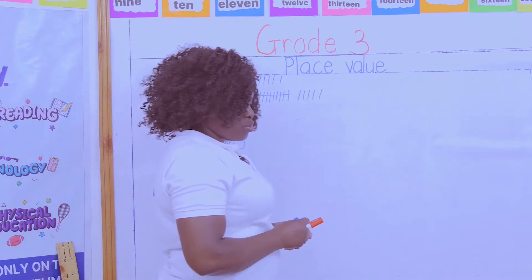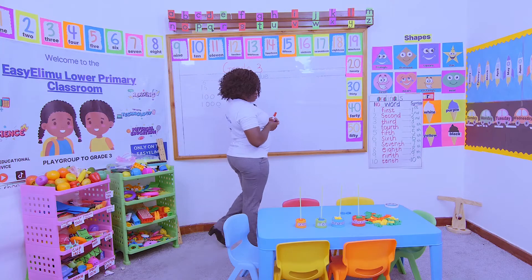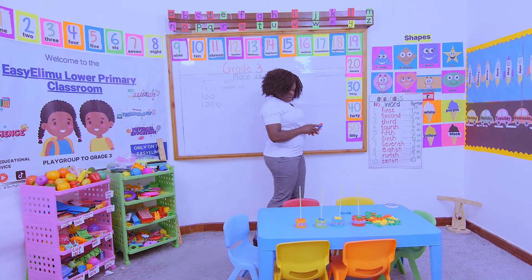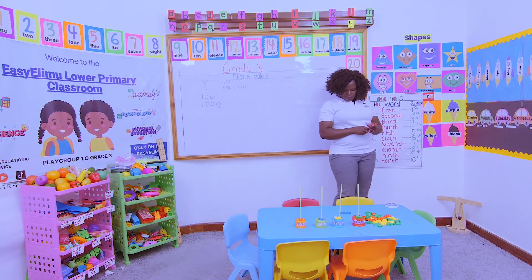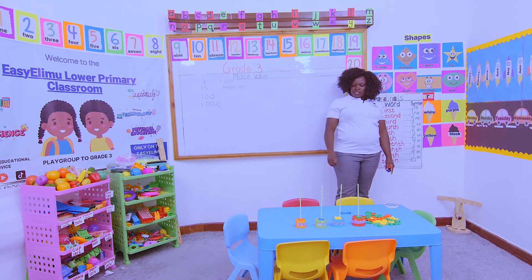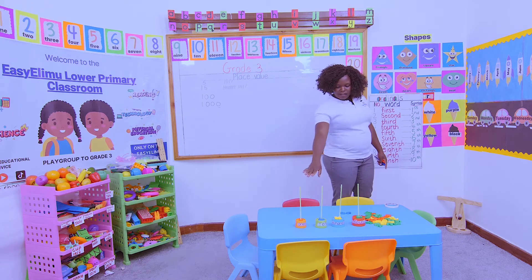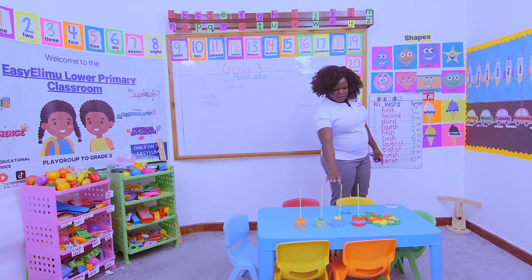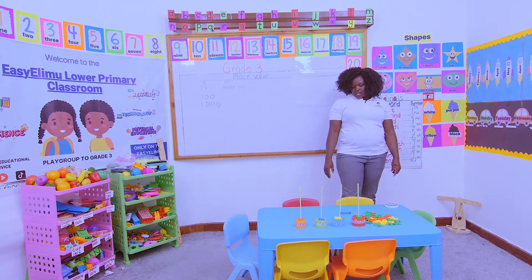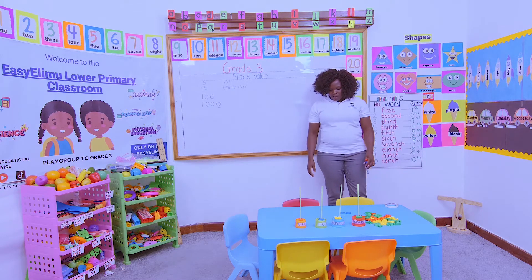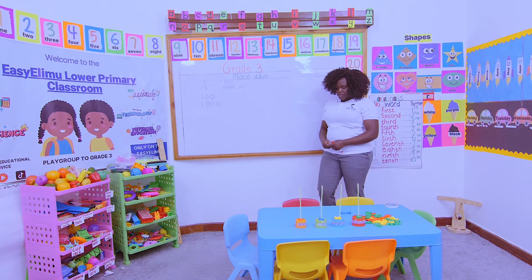How do we show 1,000 on the abacus? How do we show the thousands place value on the abacus? I have my 1s, I have my 10s, I have my 100s, and I have my 1,000s. Now I've been given a number here.